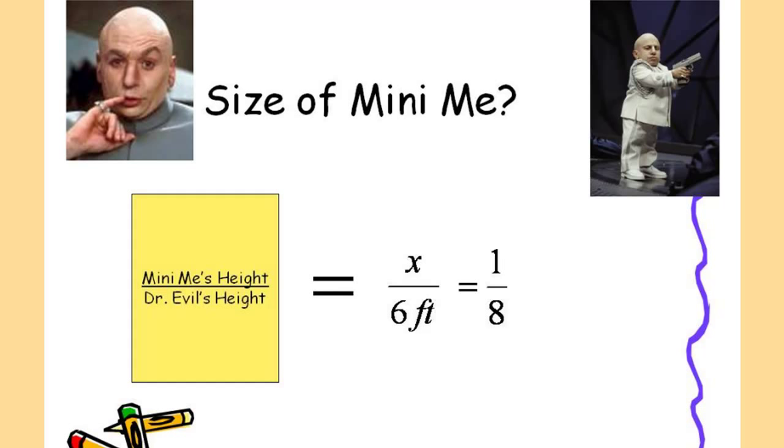A ratio compares two items so we're basically comparing Mini-Me's height to Dr. Evil's height. And a proportion is just two ratios set equal to each other. So I would introduce this to students and we would set up and talk about ratios, we talk about proportions, and we would talk about how we can solve this particular proportion.